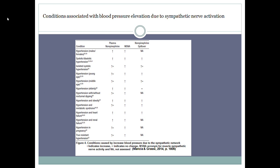Conditions associated with blood pressure elevation due to sympathetic nerve activation. This table, collected from Mancia and colleagues, displays the conditions characterized by blood pressure elevation due to sympathetic activation, as shown by the up arrows under MSNA. The results display that sympathetic hyperactivity is a generalized phenomenon, as seen by blood pressure increase shown by an increase in plasma norepinephrine, and its correlation with increased MSNA resulting in hypertension in both males and females.